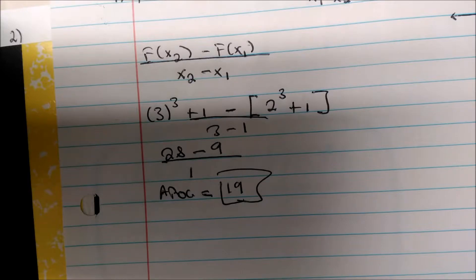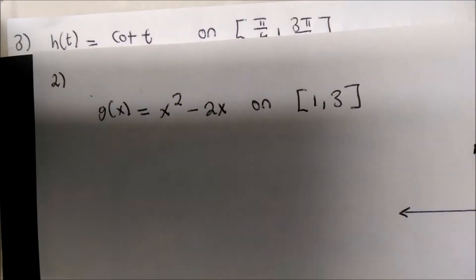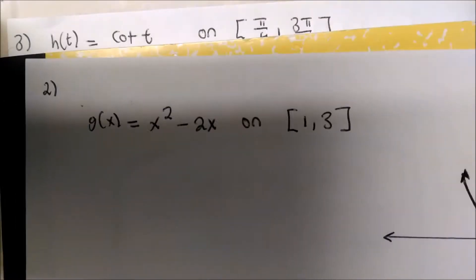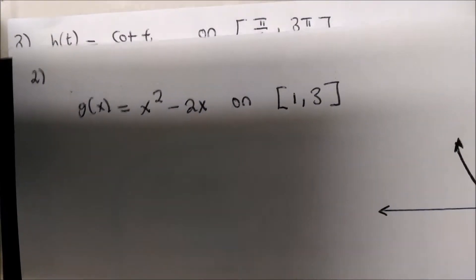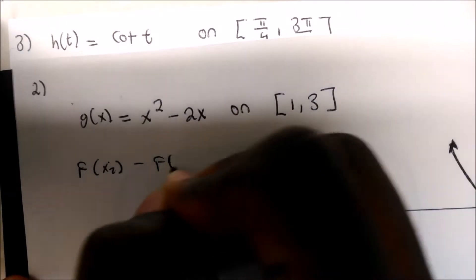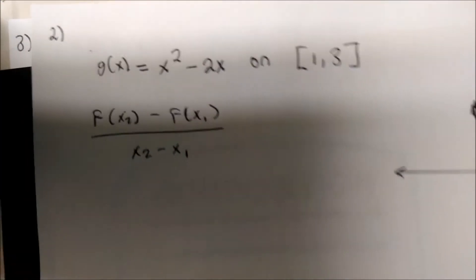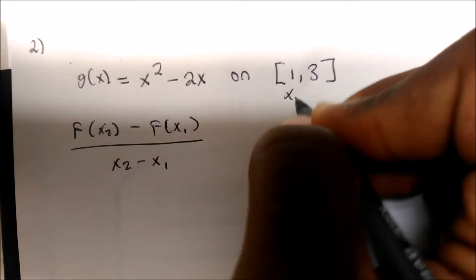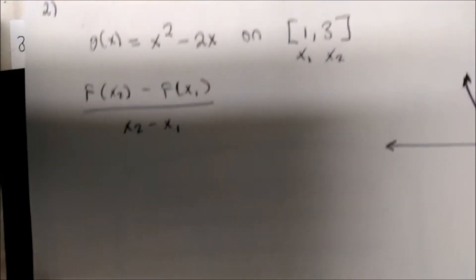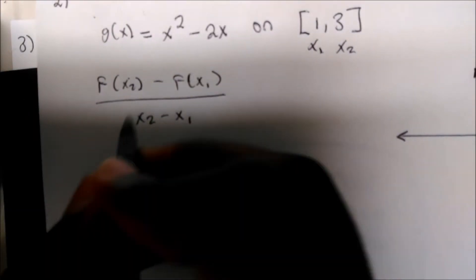Let's do another example. This is a quadratic function, and the principle stays the same: f(x2) minus f(x1) divided by x2 minus x1. Always label x1 and x2 so you don't get confused.